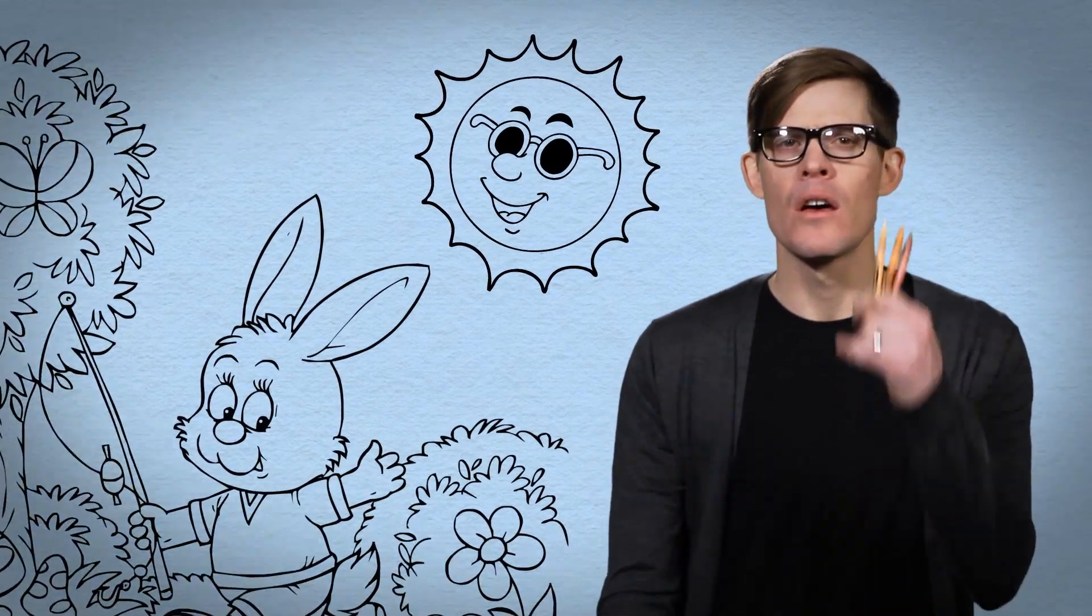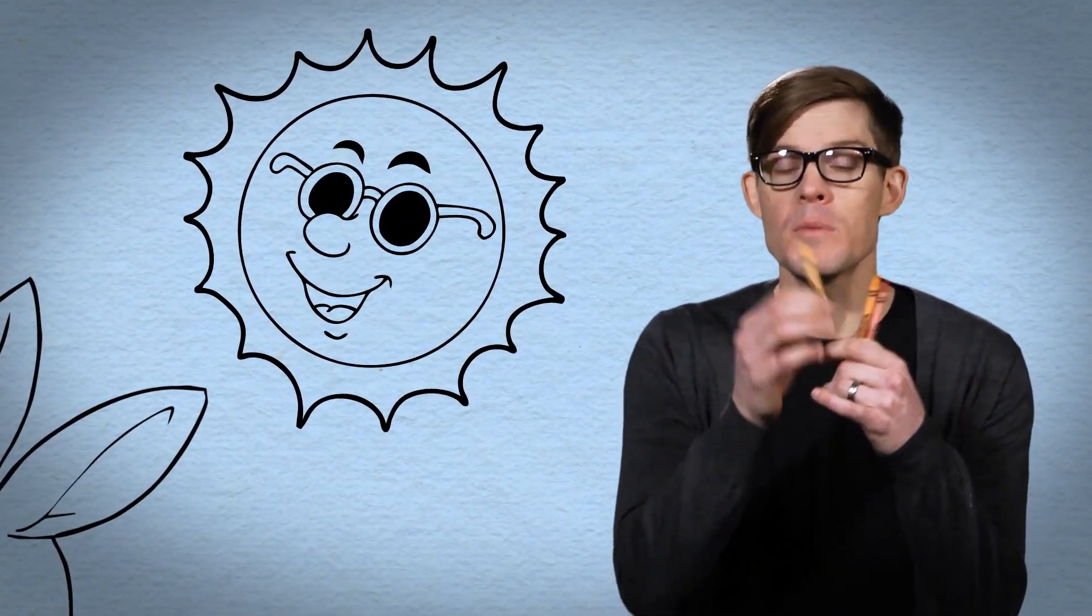If I asked you to draw a picture of the sun, which crayon would you pick? Most people would reach right for the yellow. Or if it's sunset, maybe you pick orange, unless you grew up in Japan, where children usually choose red.